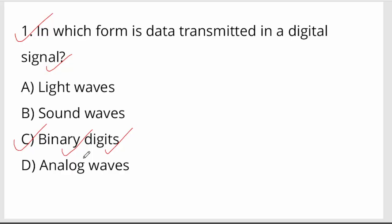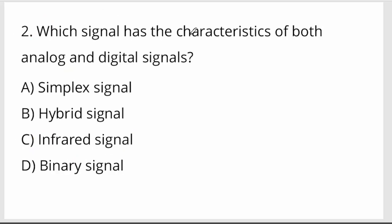Next, question number 2: Which signal has the characteristics of both analog and digital signal? Both characteristics — that is a hybrid signal. Option B — hybrid signal is your right answer.